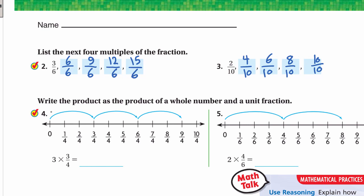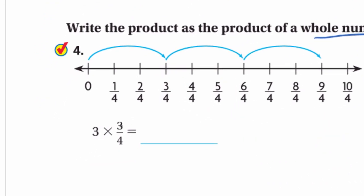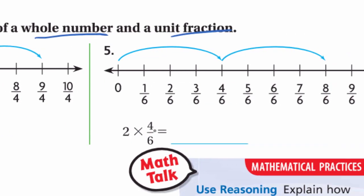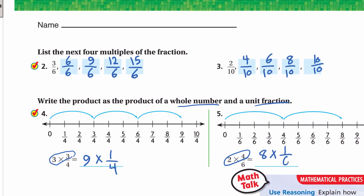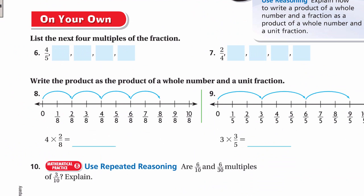Write the product as a product of a whole number and a unit fraction. We have 3 × 3/4: multiply 3 × 3 = 9, giving 9/4, which we can also write as 9 × 1/4. Next, 2 × 4/6: 2 × 4 = 8, giving 8/6, which we write as 8 × 1/6.